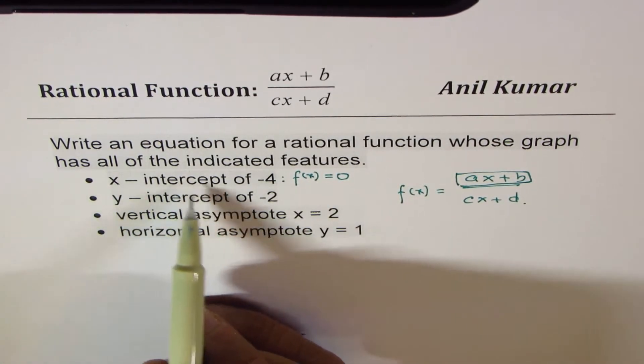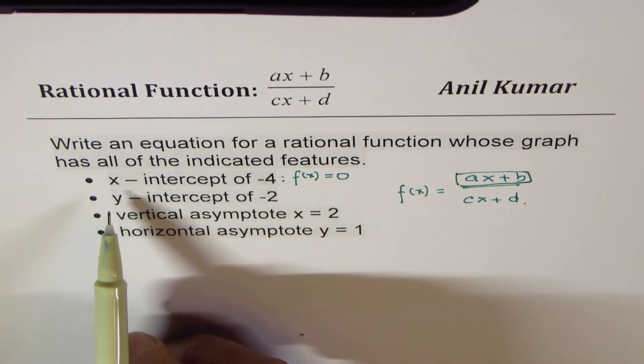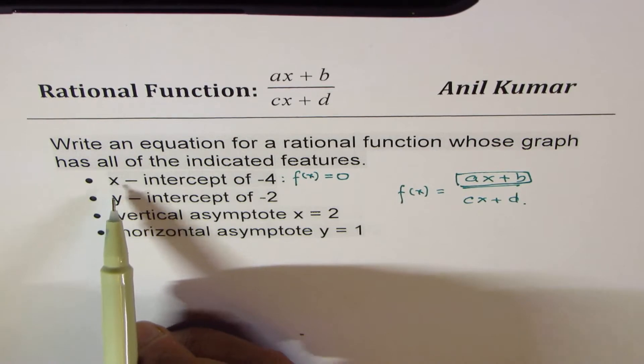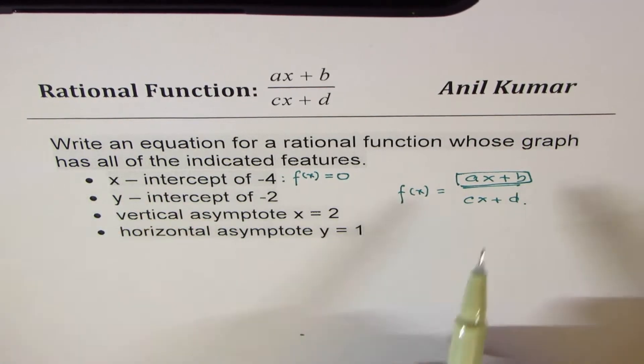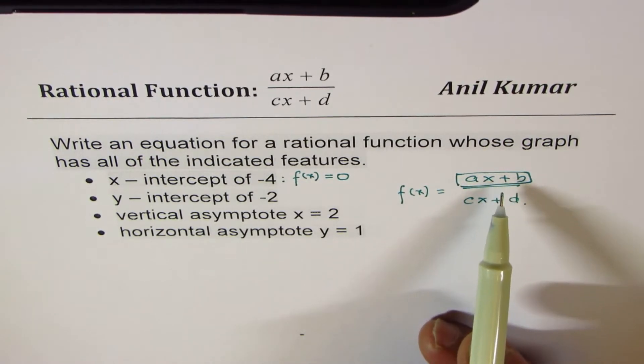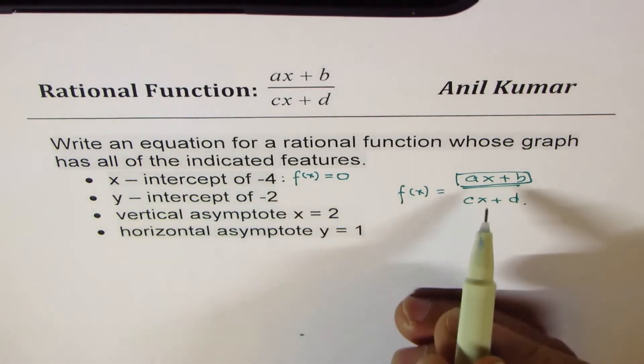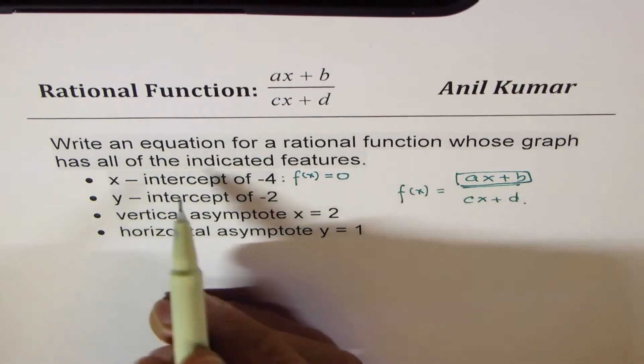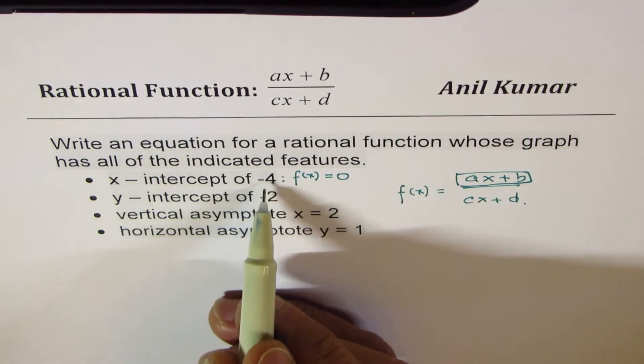Now we have given x intercept of 4, that means when x is equal to minus 4, this expression is 0. That's what it means. So for the first condition, we have to make the numerator 0 for x equals to minus 4.